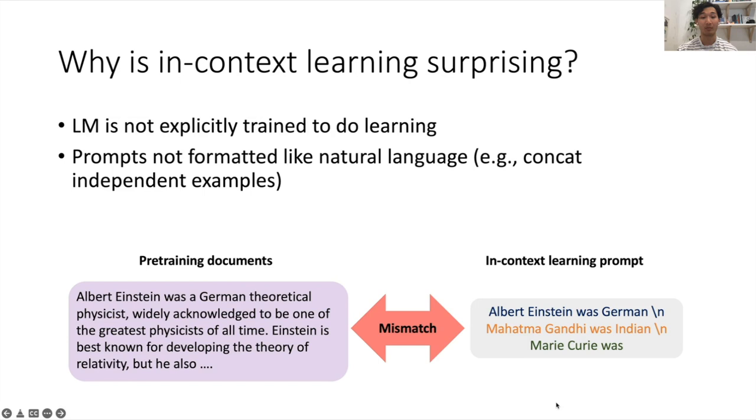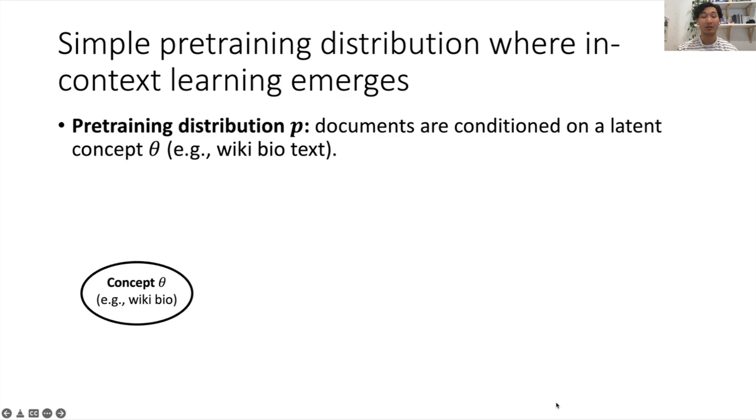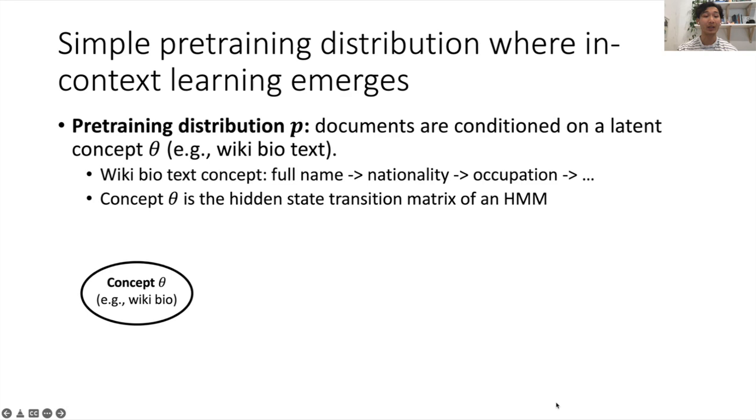In this paper, we propose a simple pre-training distribution where in-context learning emerges. In this distribution, documents are conditioned on a latent concept theta. Think of Wikipedia text. A Wikipedia text concept might look like full names transitioning to nationalities, transitioning to occupations, etc. Concretely, in our theory, the concept is a hidden state transition matrix of an HMM.